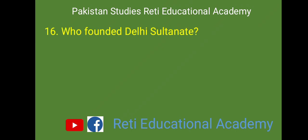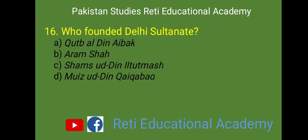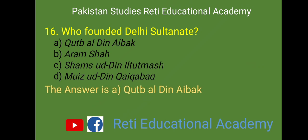MCQ number 16: Who founded the Delhi Sultanate? A. Qutubuddin Aibak, B. Aram Shah, C. Shamsuddin Iltutmish, D. Moizuddin Kaikabad. And the right answer is A. Qutubuddin Aibak.